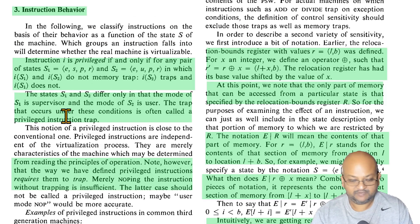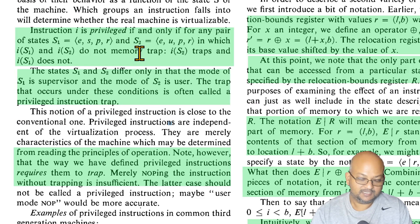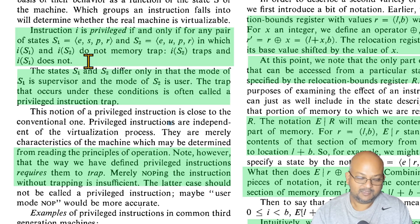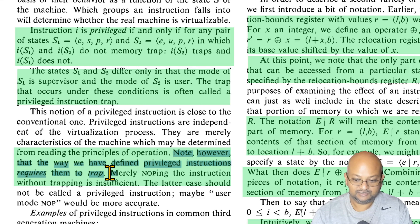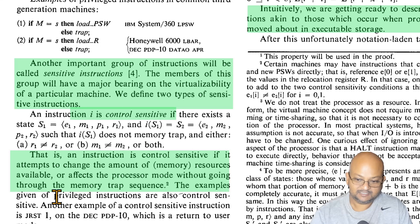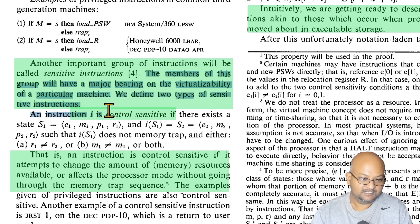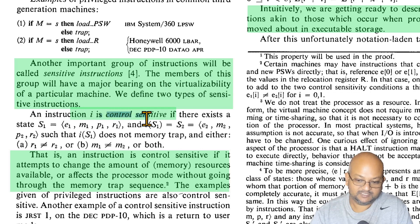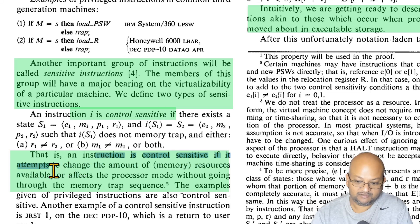Next we come to definitions related to instruction behavior. The first definition is for what it means for an instruction to be privileged: an instruction is privileged if and only if it traps in a way that is not a memory trap. We also have to define a class of sensitive instructions. The first type is control sensitive: an instruction is control sensitive if it tries to change the amount of memory resources or tries to affect the processor mode.